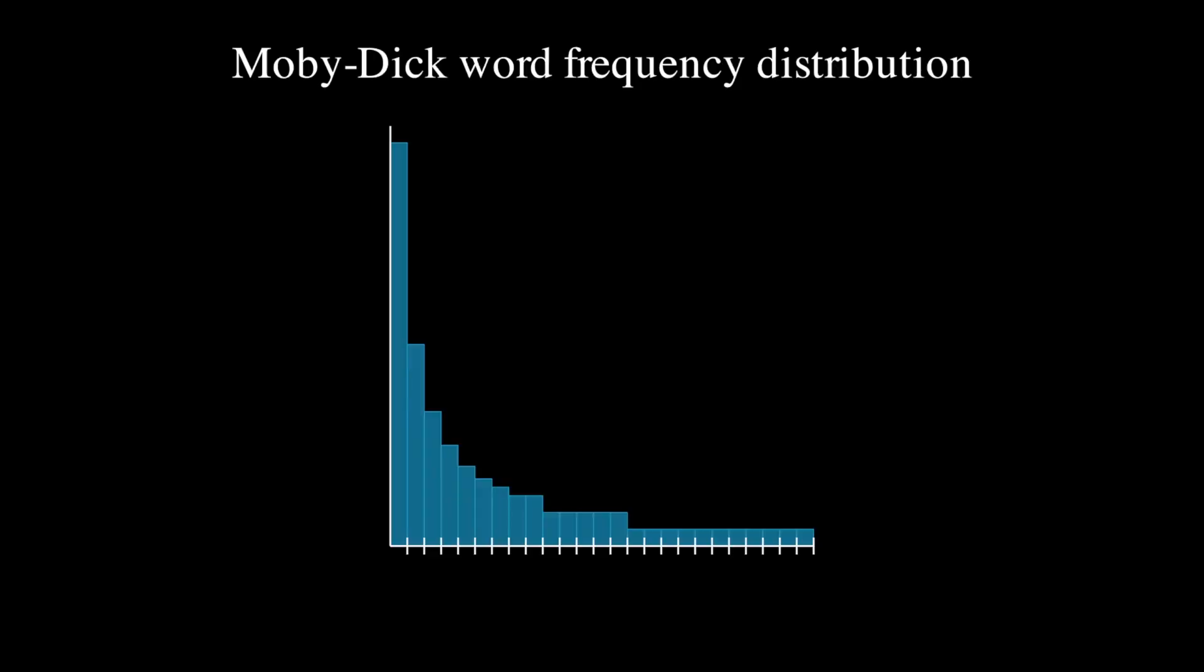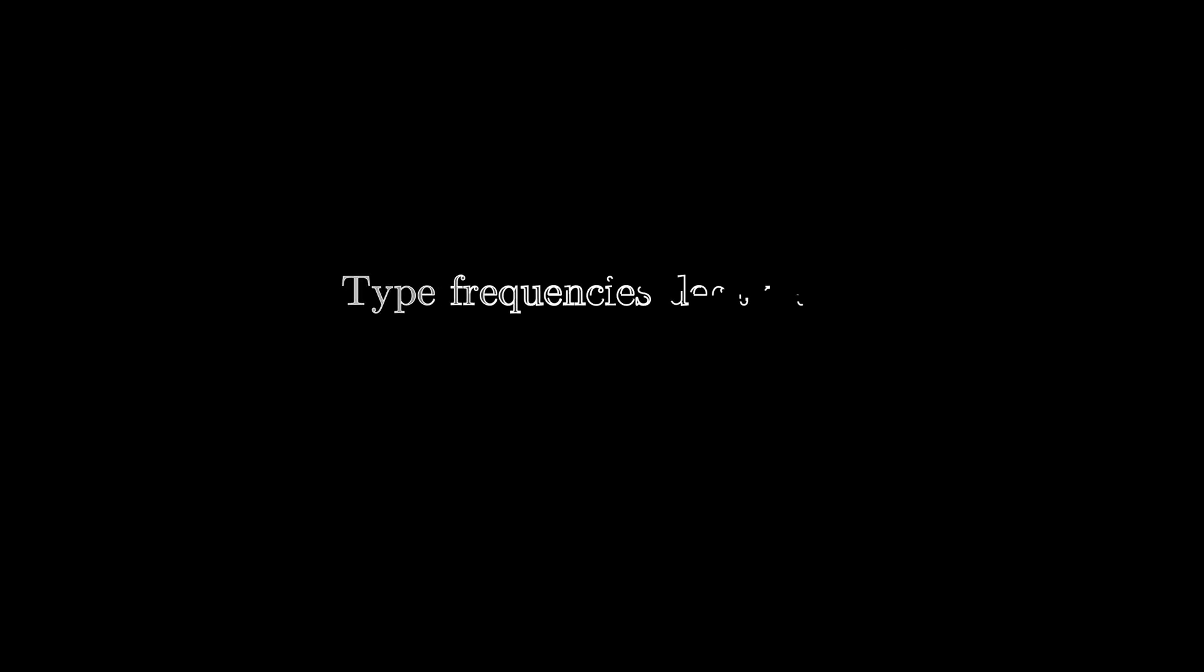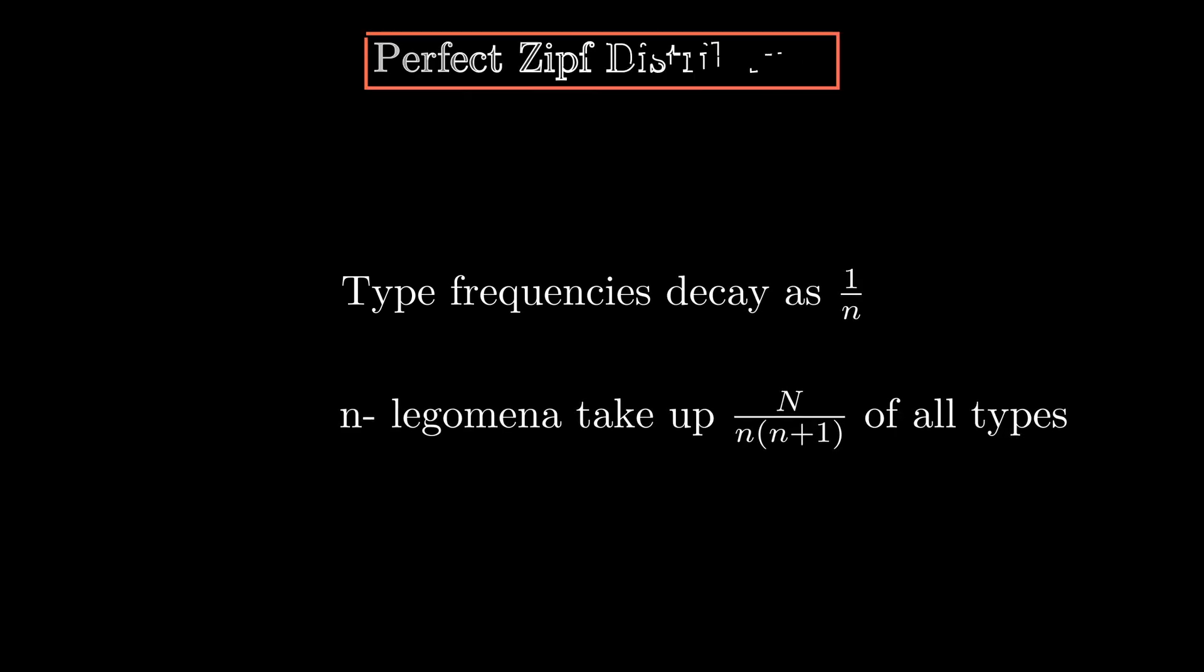However, we see that 1 over n rule breaks down when we look at least frequent types. This is expected because in a text, types take discrete values, unlike land area or wealth. But another pattern can be identified here. Hapexes account for almost a half of all types. Dislegomena take up roughly a sixth of all types, and so on. A corpus which obeys these two laws exactly is said to have a perfect Zipfian distribution.